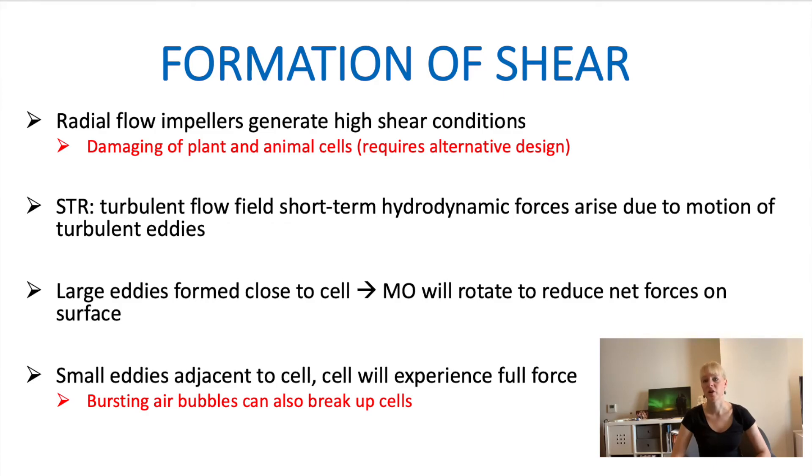So the radial flow impellers that we often use within these bioreactors are actually quite well known to generate a lot of shear, which you can see from one aspect this would be beneficial. So you get these kind of turbulent eddies that will make sure that these vortices that are good for gas dispersion.